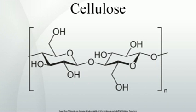Several different crystalline structures of cellulose are known, corresponding to the location of hydrogen bonds between and within strands. Natural cellulose is cellulose I, with structures Iα and Iβ. Cellulose produced by bacteria and algae is enriched in Iα, while cellulose of higher plants consists mainly of Iβ. Cellulose in regenerated cellulose fibers is cellulose II. The conversion of cellulose I to cellulose II is irreversible, suggesting that cellulose I is metastable and cellulose II is stable.